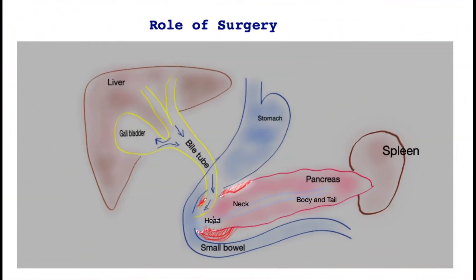The aim of surgery in pancreatic cancer is very straightforward — it aims to remove the tumour altogether. Let's look at this cartoon to better understand how this comes about.